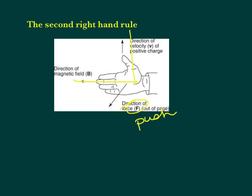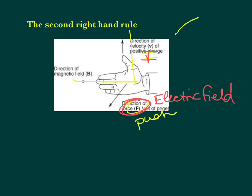If we were talking about current — which is basically the flow of charge — the current would be like your velocity. And force is like electric field, because electric field is force per coulomb. The magnetic field will still always be your four fingers, always B. The electric field could be the force, and the current could be the velocity — other things that can be used with the second right-hand rule.